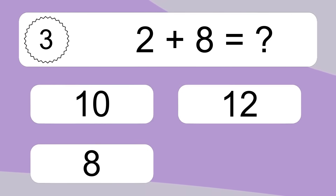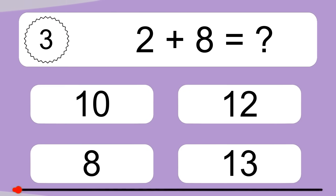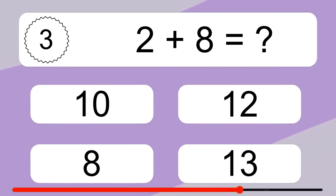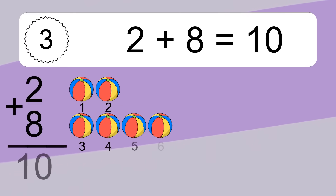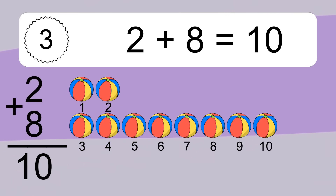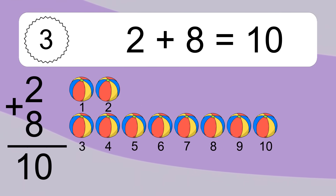2 plus 8 equals what? 2 plus 8 equals 10. Let's count it: 1, 2, 3, 4, 5, 6, 7, 8, 9, 10.